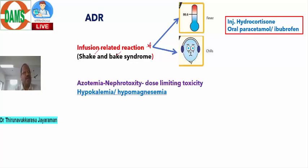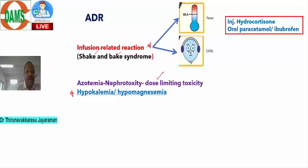One of the most important adverse effects of amphotericin B is nephrotoxicity, which is dose-limiting. This is maximum with conventional amphotericin B. Liposomal amphotericin B and other lipid formulations (ABCD, ABLC) have less chance of causing nephrotoxicity. Electrolyte imbalances associated with amphotericin B toxicity include hypokalemia and hypomagnesemia.